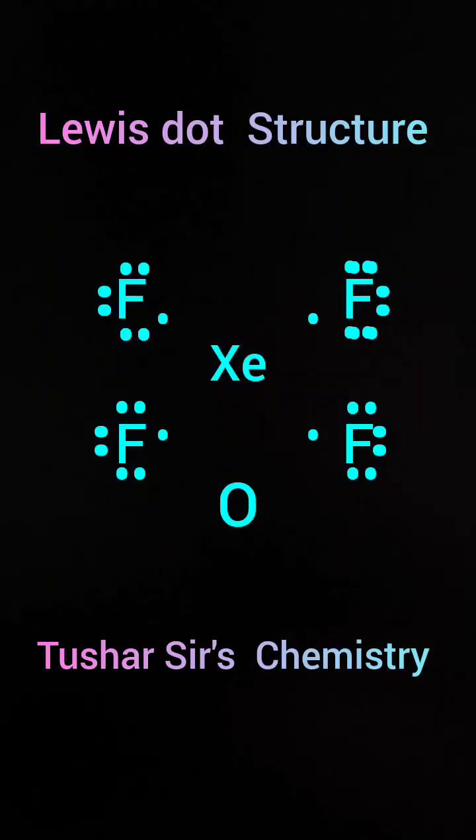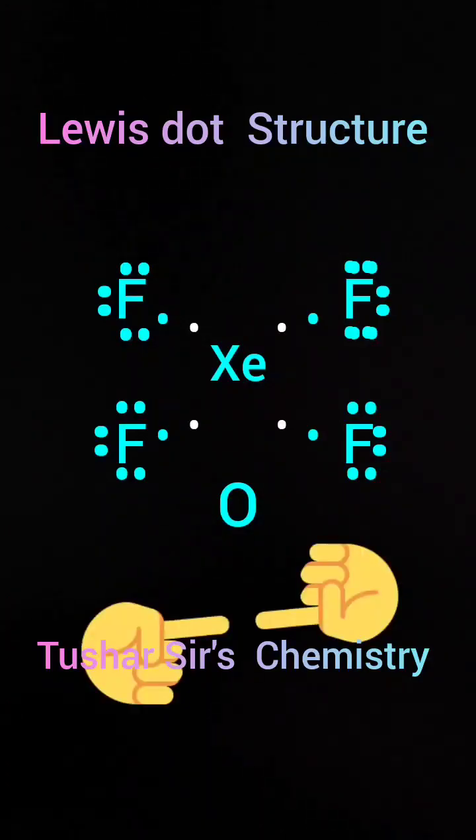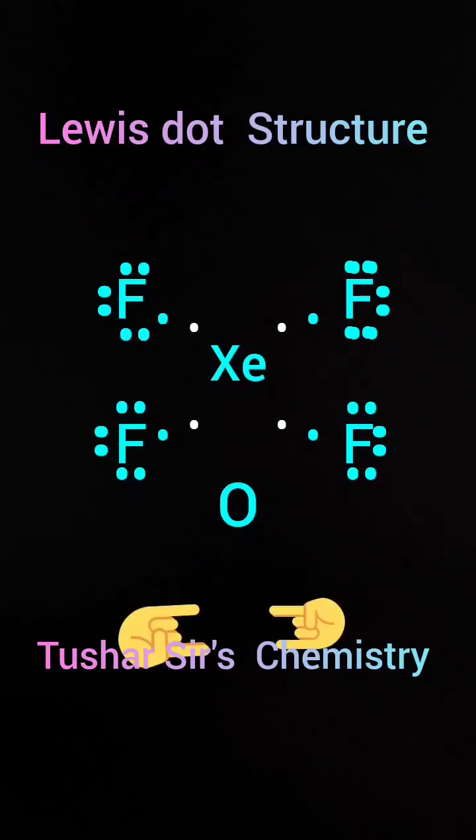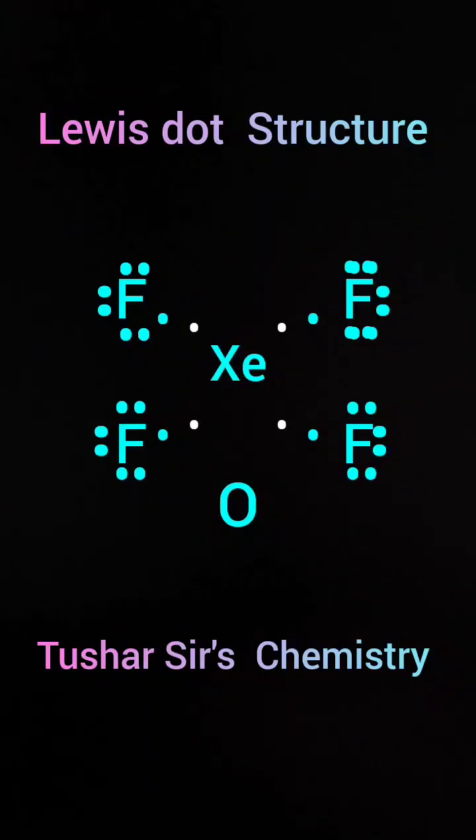As one fluorine shows one electron to xenon, xenon will show one electron to fluorine. I told, if you will show me one finger, I will show you one finger. If you will show two fingers, I will show you two fingers. This is the trick.